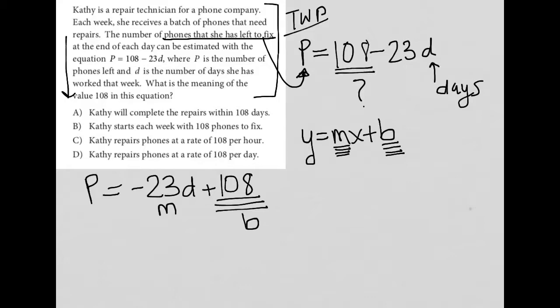So let's see which answer choice best fits this description. Choice A says, Kathy will complete the repairs within 108 days. Well, we know that that can't be correct, because 108 has nothing to do with the number of days.